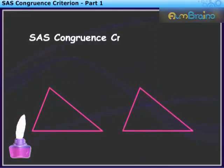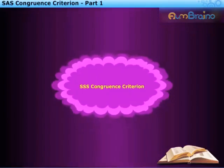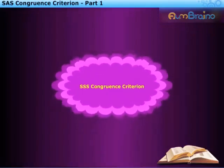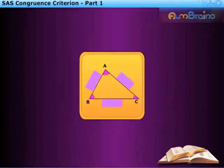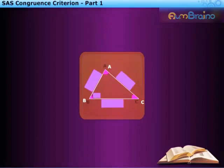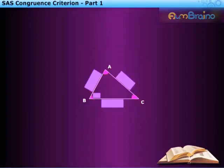SAS Congruence Criterion. We have already learned the SSS Congruence Criterion while making the exact copy of the given triangle ABC as shown here. Let us now find another criterion of congruence of triangles. For this, we will try to draw an exact copy of the same triangle ABC whose hidden sides and angles can be disclosed when required.